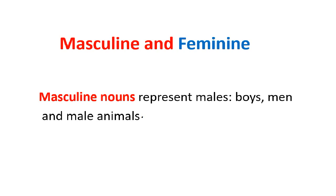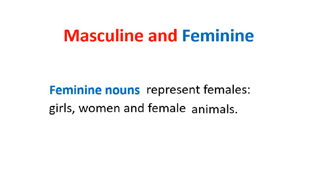Look at the book and read along with me. Masculine nouns represent males, like boys and men. Keep one important thing in mind: there are also male animals. Feminine nouns represent females, like girls, women, and female animals.